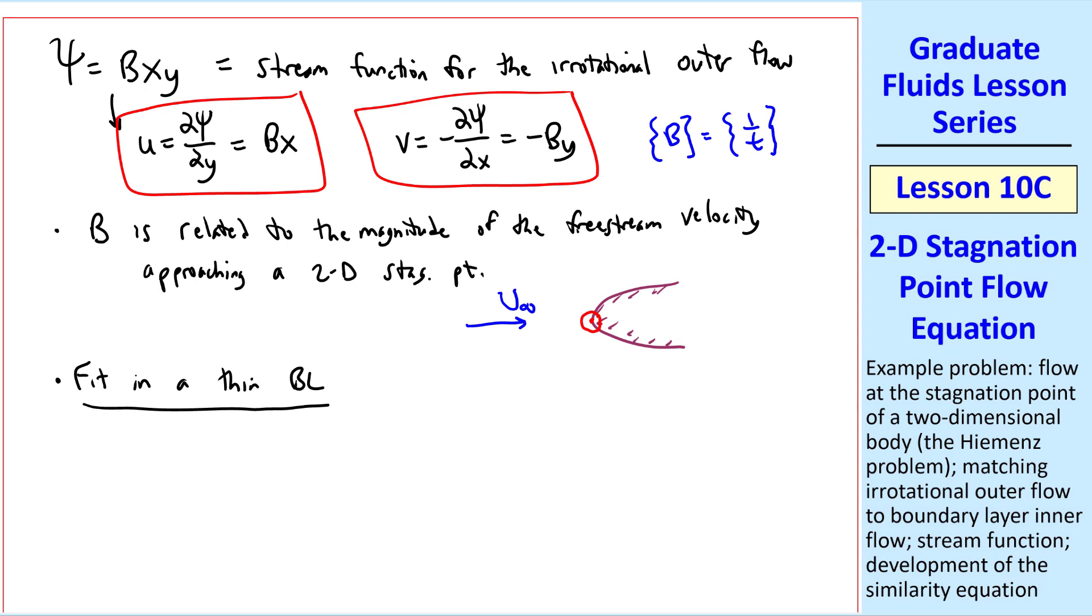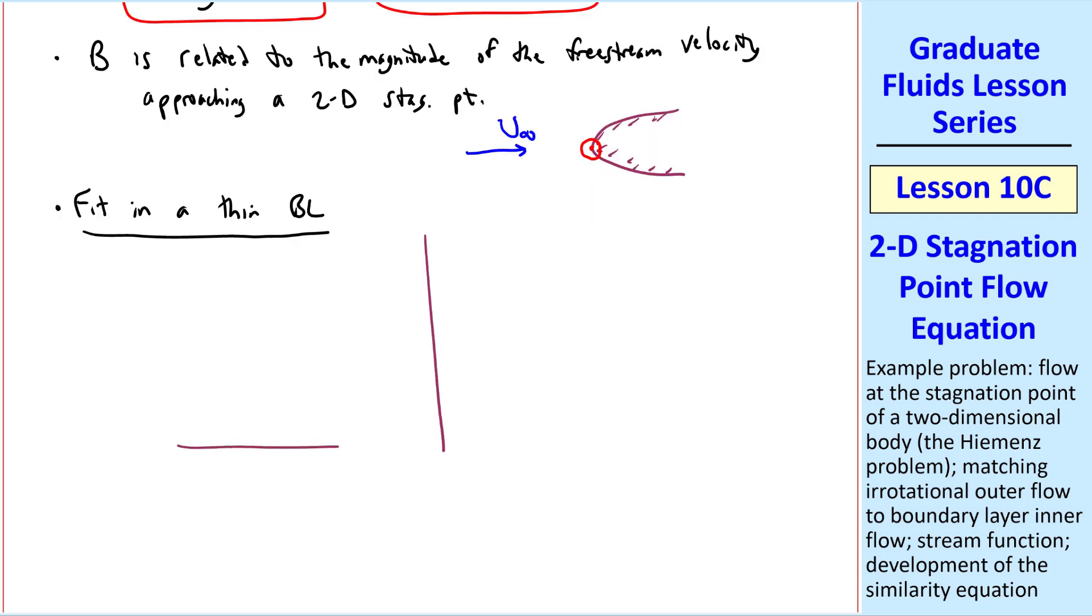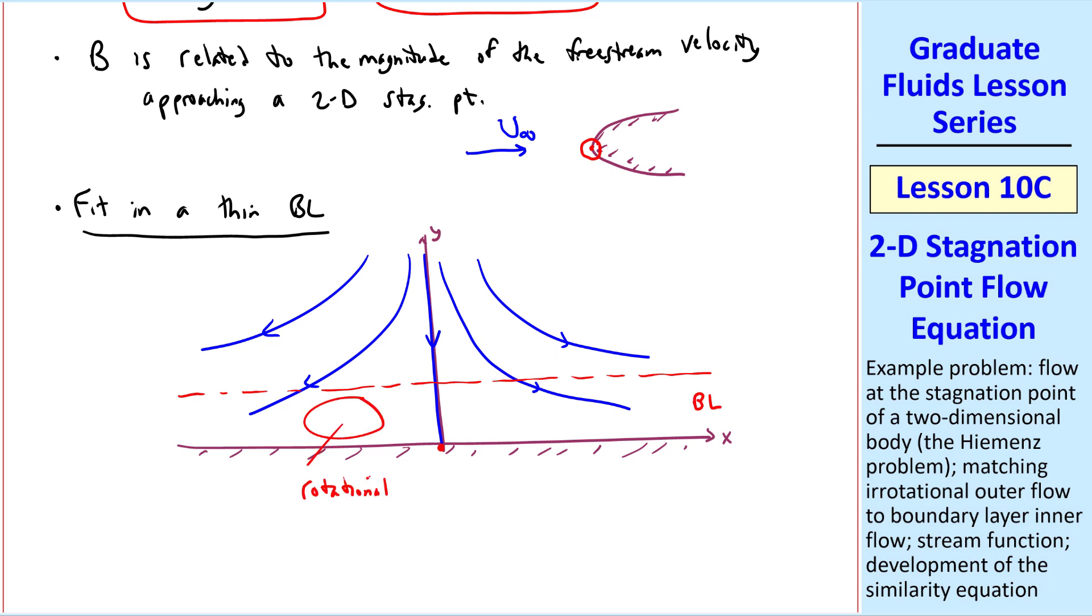Now let's fit in a thin boundary layer. I'll sketch the flow where the x-axis is a wall, and the outer flow streamlines look something like this, with the stagnation streamline coming straight down to the stagnation point. Now we'll assume that there's a thin boundary layer in here. This part of the flow is rotational, and viscous effects are important, whereas this part of the flow is irrotational. We must satisfy the no-slip condition at the wall, so we expect our profile to look something like that. But this flow is accelerating above the boundary layer, since we know that u = bx.